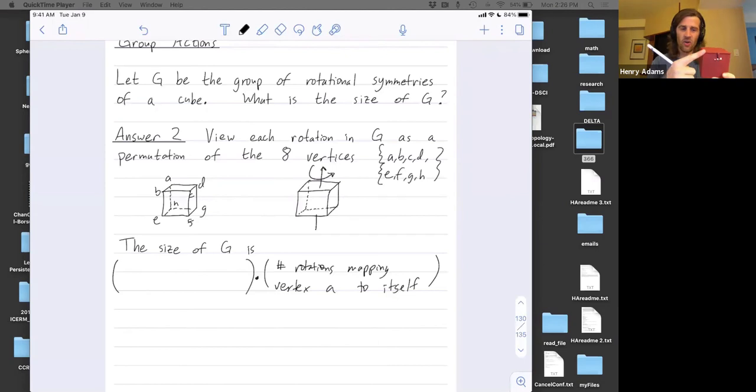So how many rotations map vertex A to itself? Well, I can either do nothing or I could do this rotation. Or I could do this rotation. So you can sort of see that the only three rotations I could do when I fix this vertex at my index finger is I could take this face and map it either here or here or leave it put. So fixing this vertex, there's three rotations I could do. Leave this face put or put it here or put it there. So this is going to be three.